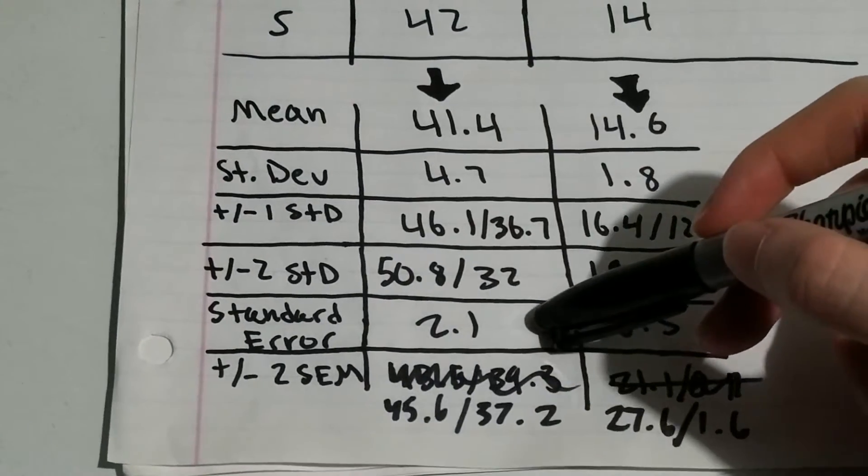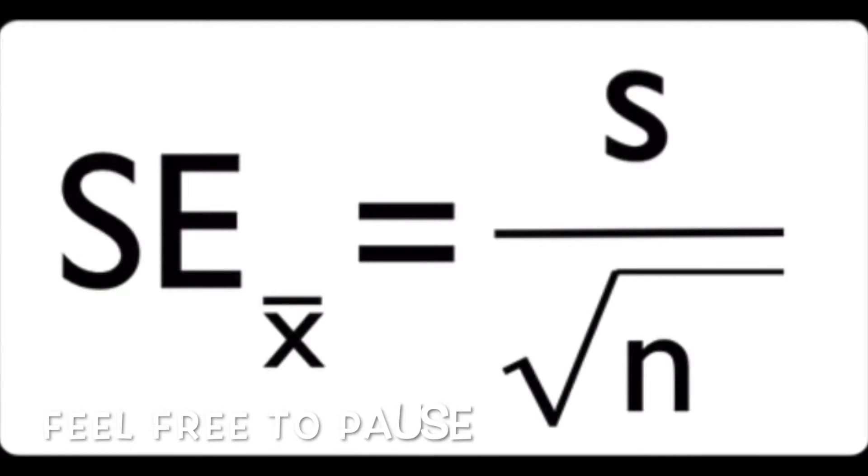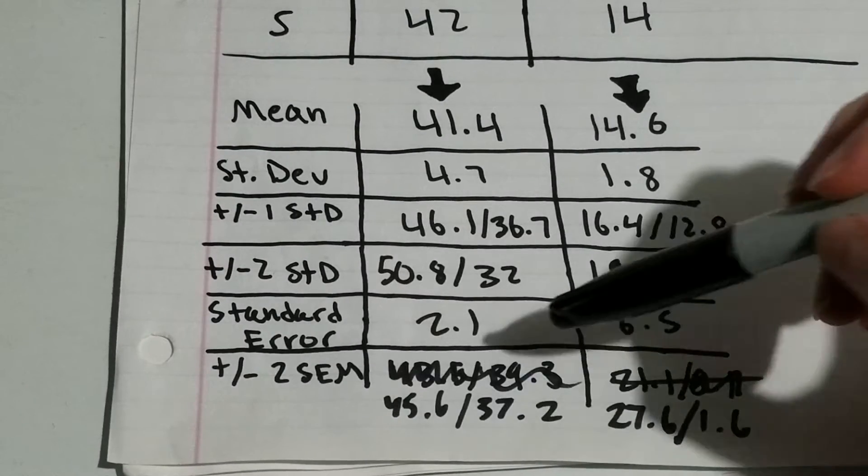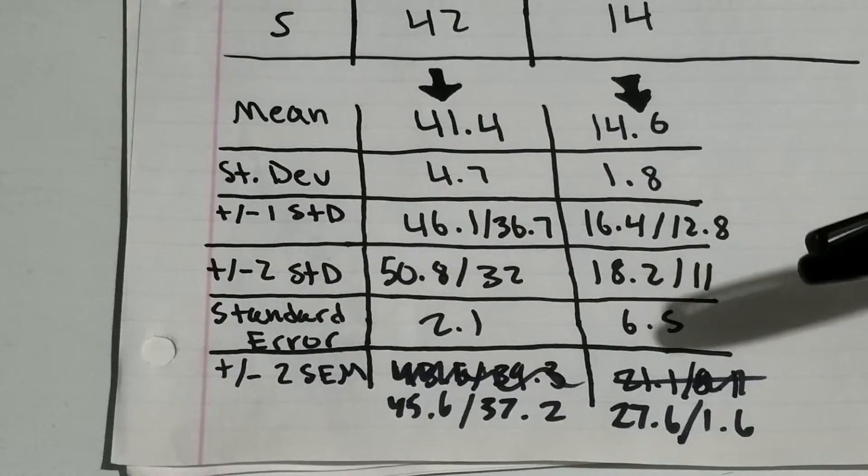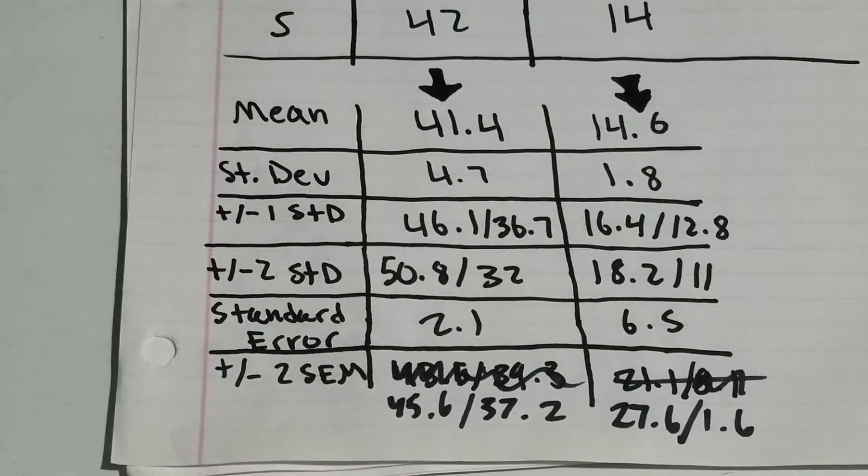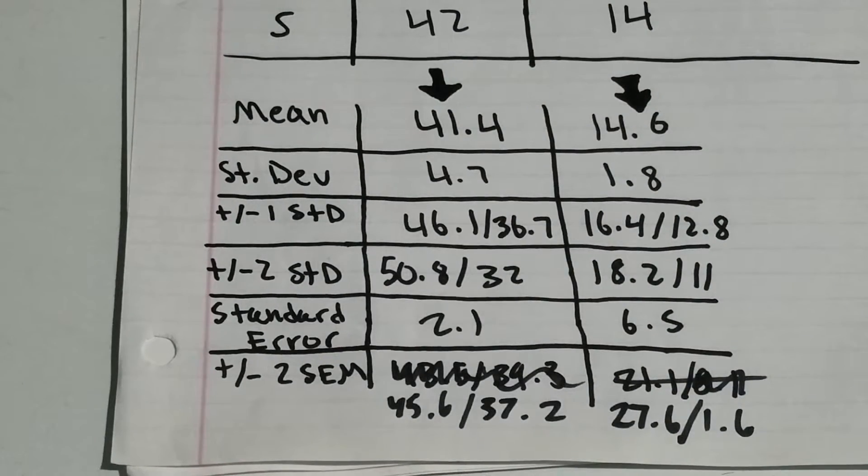To find the standard error, there's going to be a formula up on the screen. What you want to do for that is you're going to take your standard deviation and then divide it by the square root of n, which in this case n is 5 since that's the number of trials that we have.